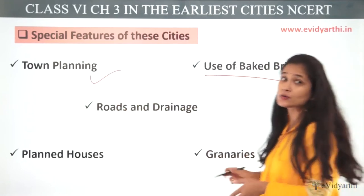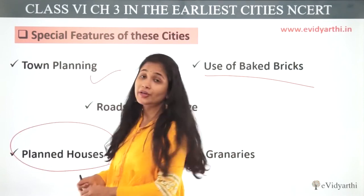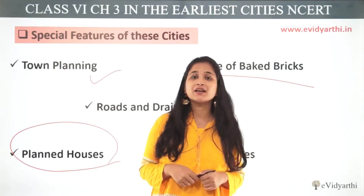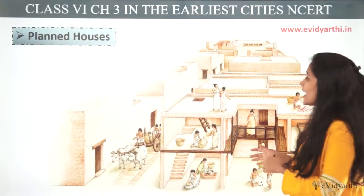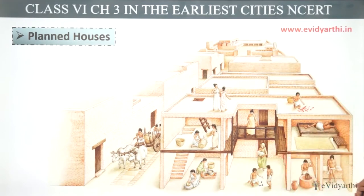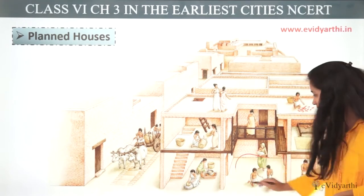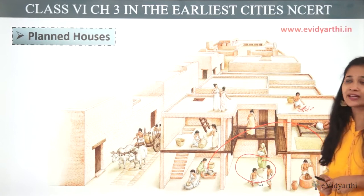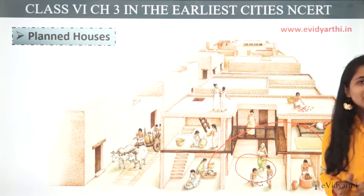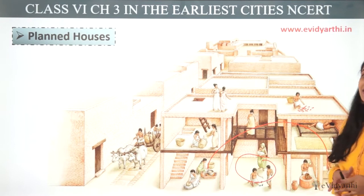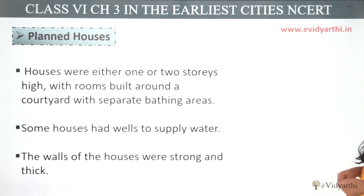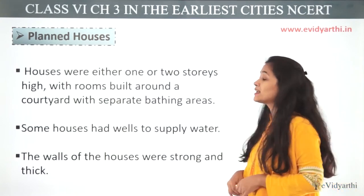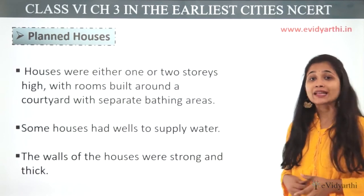Now we will learn about planned houses. So what was happening in this place? It was very well planned in this area. If you look at this house, you can see the rest of the rooms. In this way, we will see the house of our civilization. First of all, houses were either one-story or two-story high, with rooms built around a courtyard, with separate bathing areas.